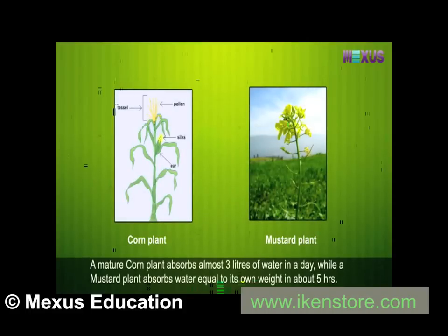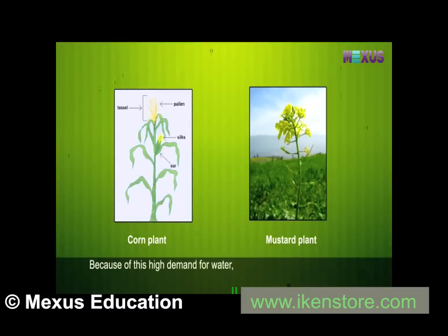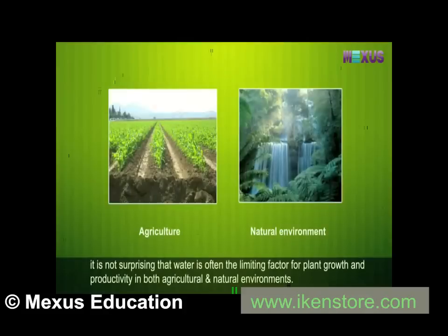A mature corn plant absorbs almost 3 litres of water in a day, while a mustard plant absorbs water equal to its own weight in about 5 hours. Because of this high demand for water, it is not surprising that water is often the limiting factor for plant growth and productivity in both agricultural and natural environments.